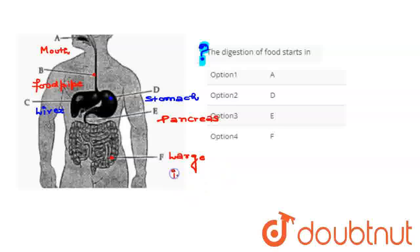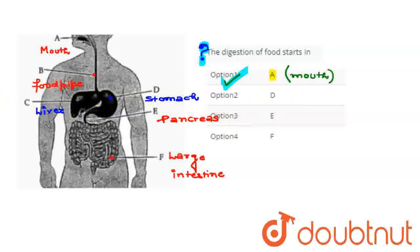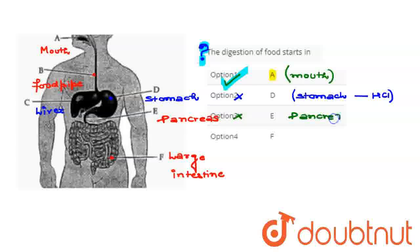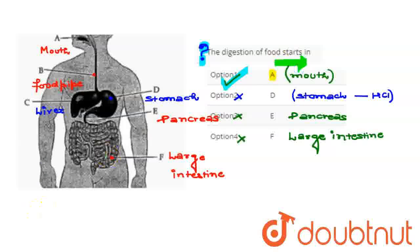Okay, if you can see the options: the first option we have given is E — this is our right option, because digestion starts from the mouth. The second option given is D, which is our stomach. D is correct because the stomach contains HCL, which is involved in food digestion. E is our pancreas, which secretes enzymes for digestion of food. And F is our large intestine. Clearly, the first option is right — digestion of food starts in the mouth.